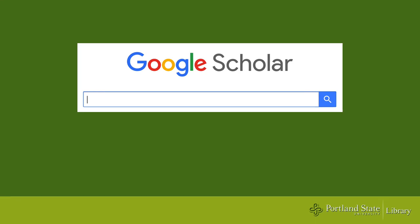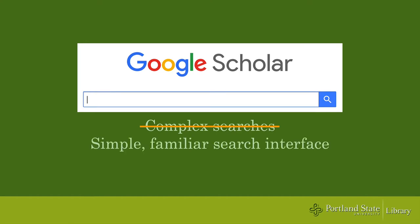Google Scholar does not have the ability to create complex searches like other article databases. The trade-off is that searching in Google Scholar is simple and familiar to users.